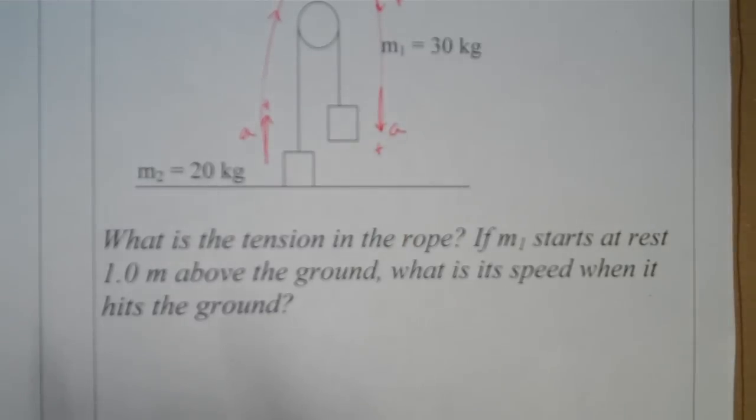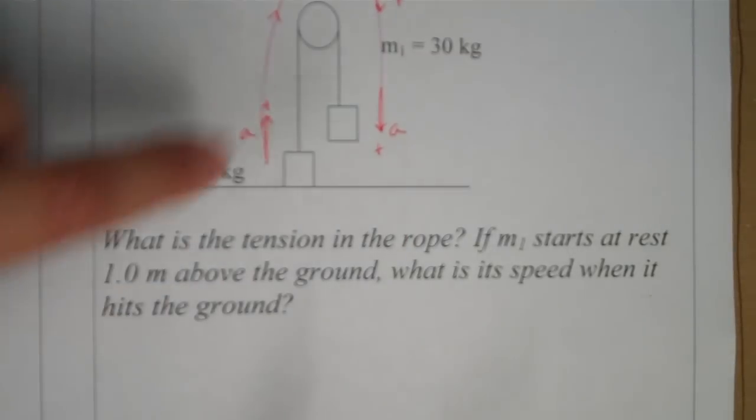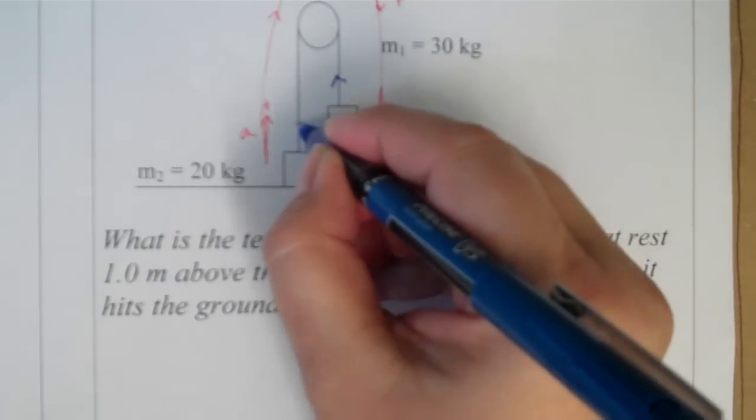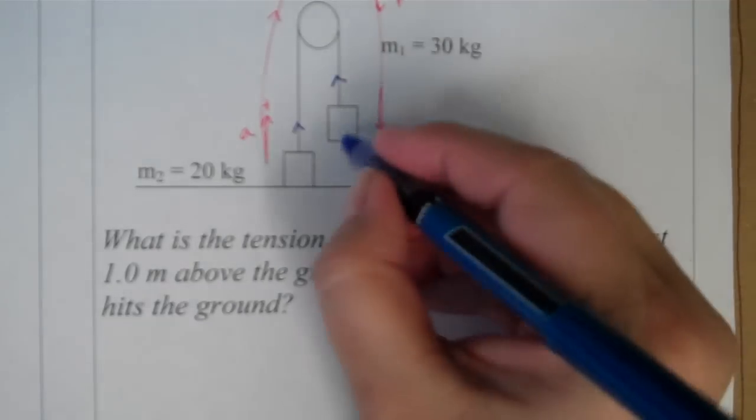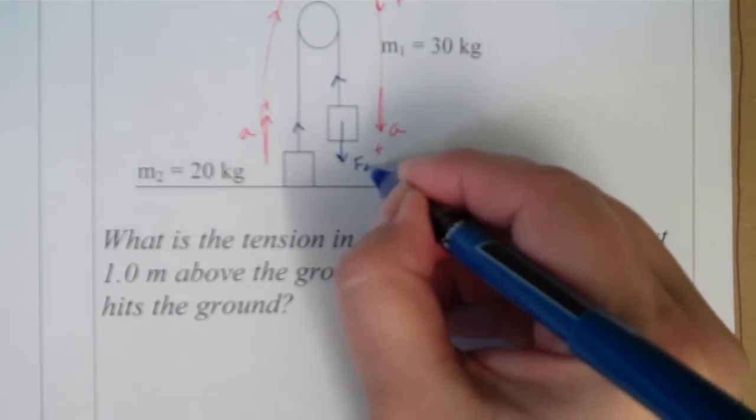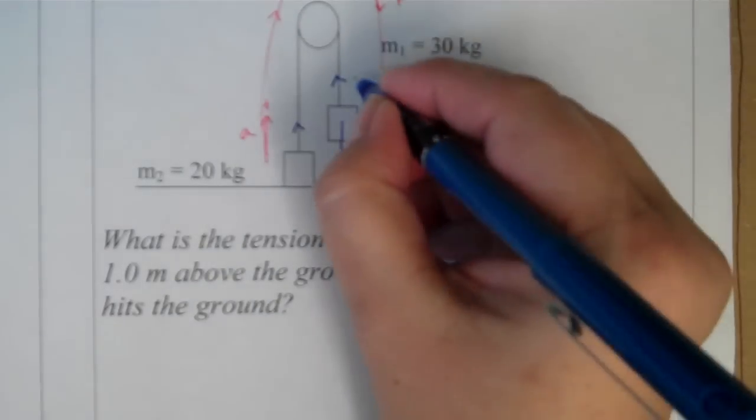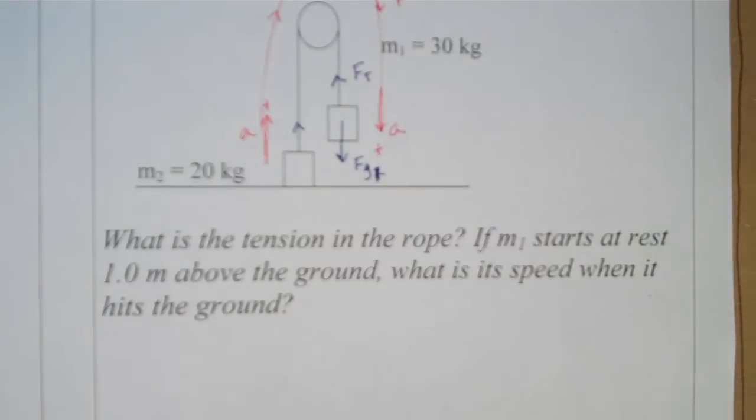Why is that acceleration not 9.8? If I cut the rope, it would be 9.8, but that tension is going to cause it to slow down a little bit, or reduce that acceleration. So it'll have gravitational force pulling it down, and I'll call that mass one. But this force of tension is going to slow that down a little bit, so it won't be 9.8 meters per second squared anymore.